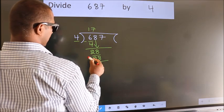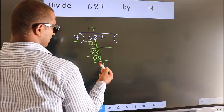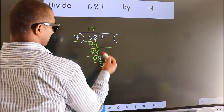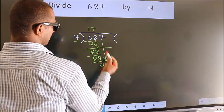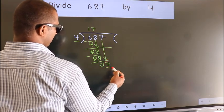Now, we subtract. We get 0. After this, bring down the beside number. So, 7 down. So, 7.